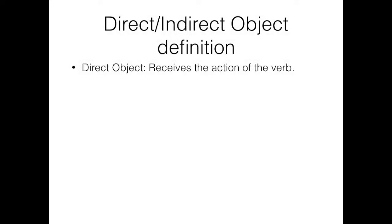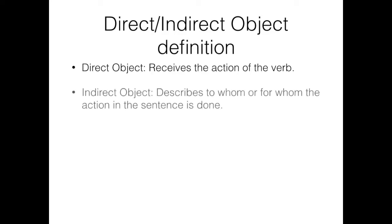In English, a direct object is the noun or pronoun that receives the action of a verb. An indirect object indicates to whom or for whom the action in the sentence is done.